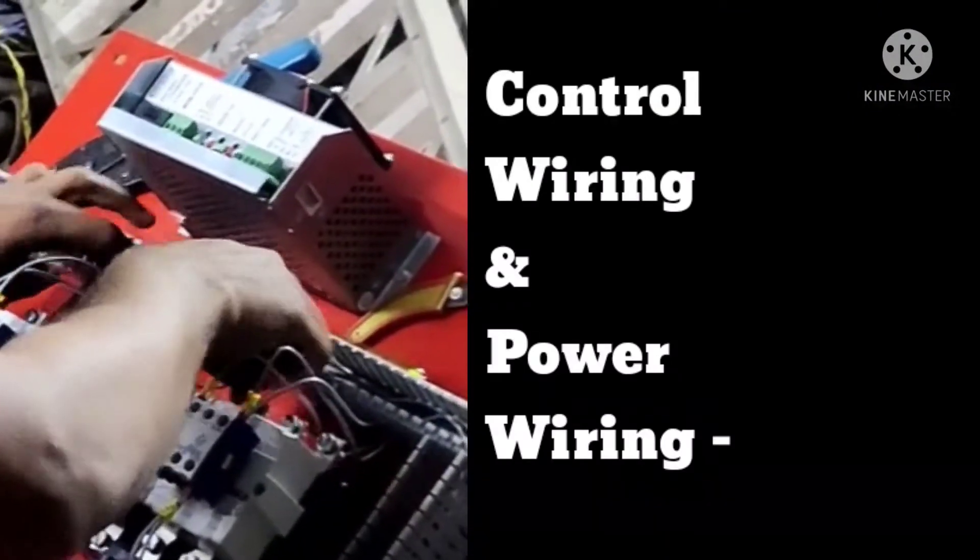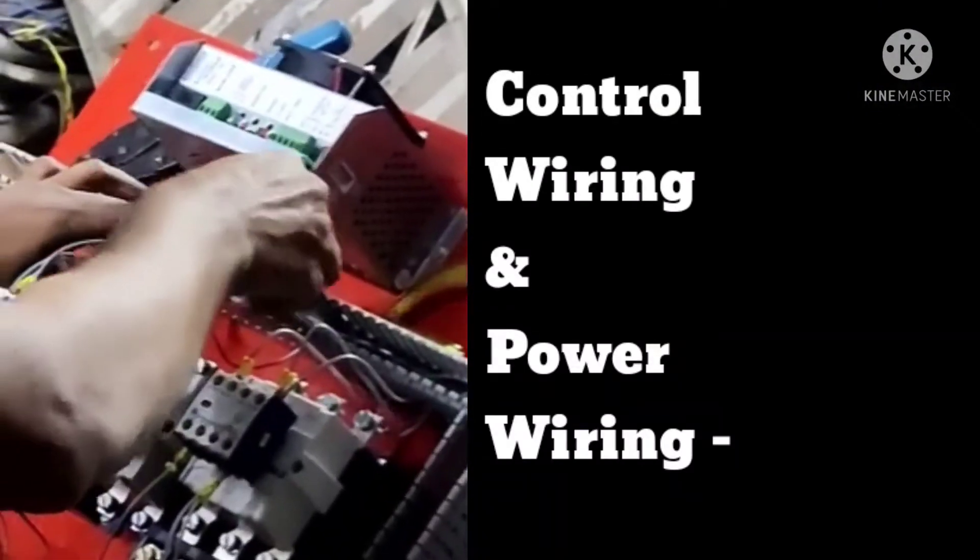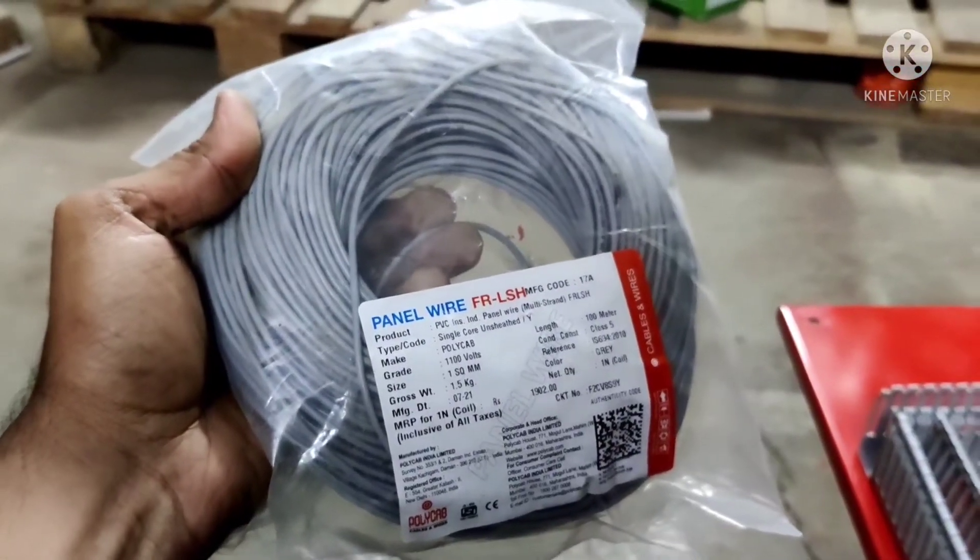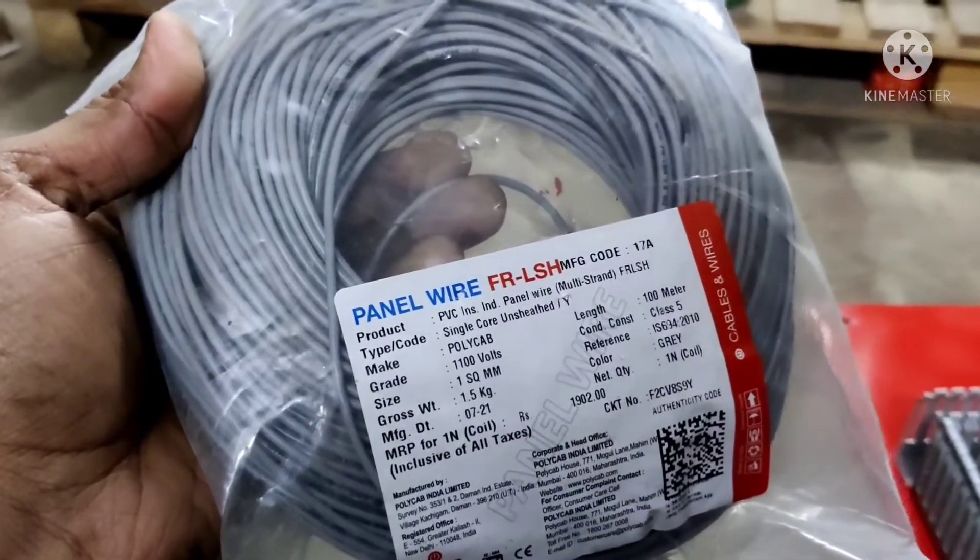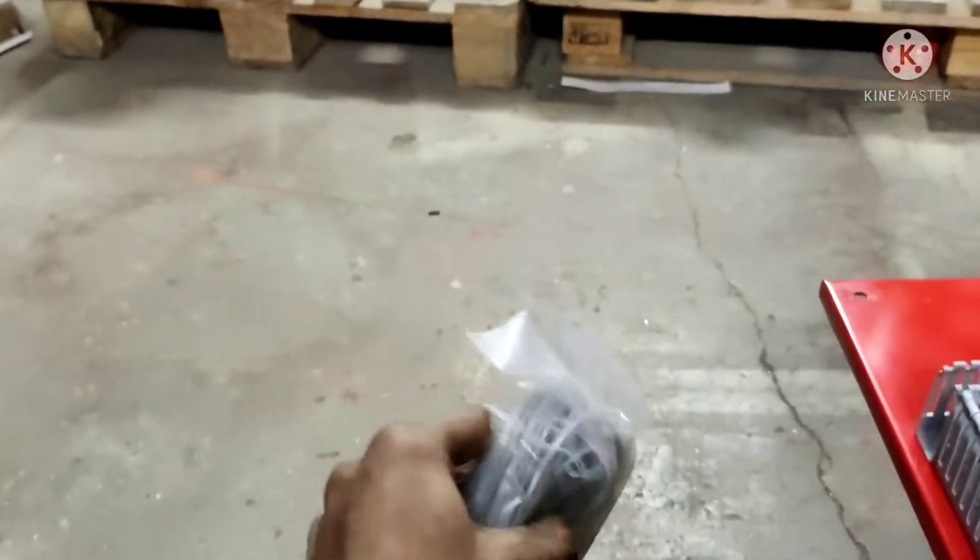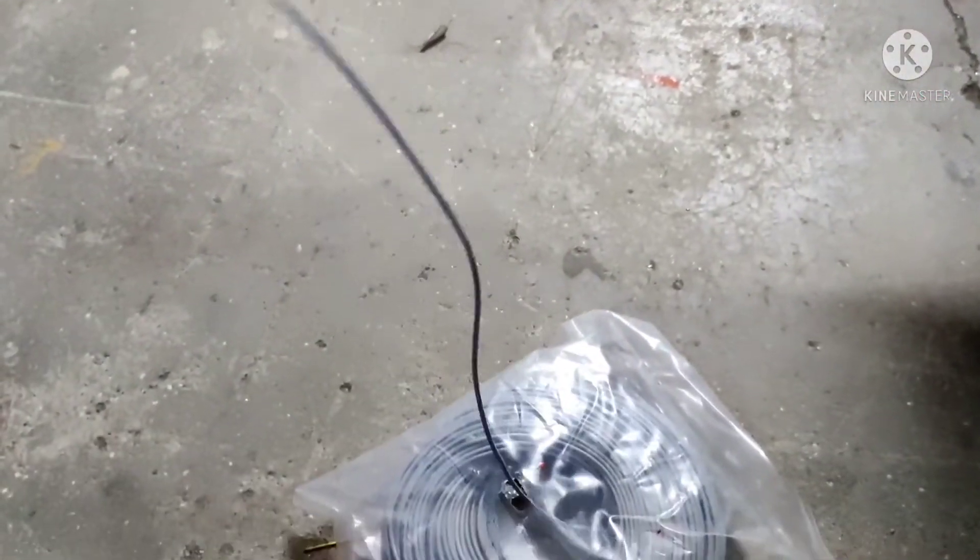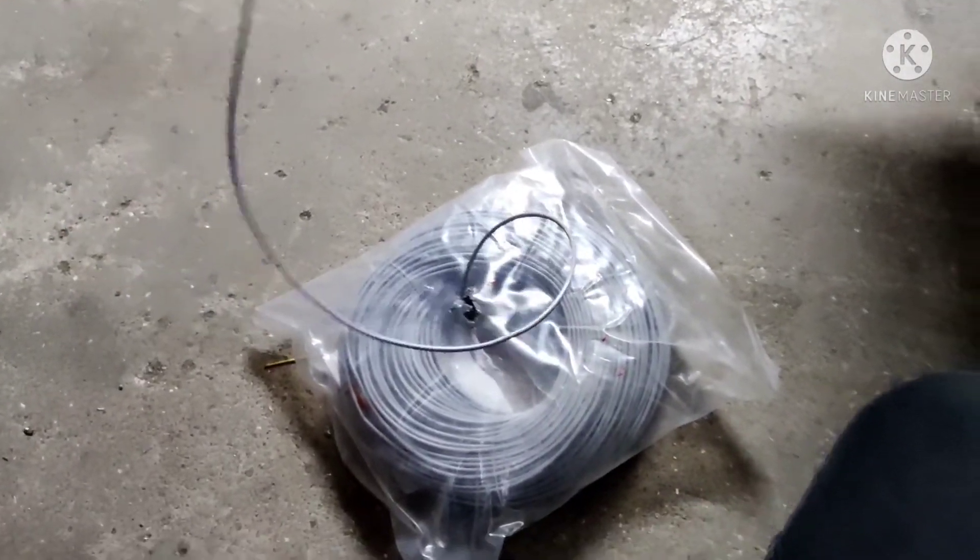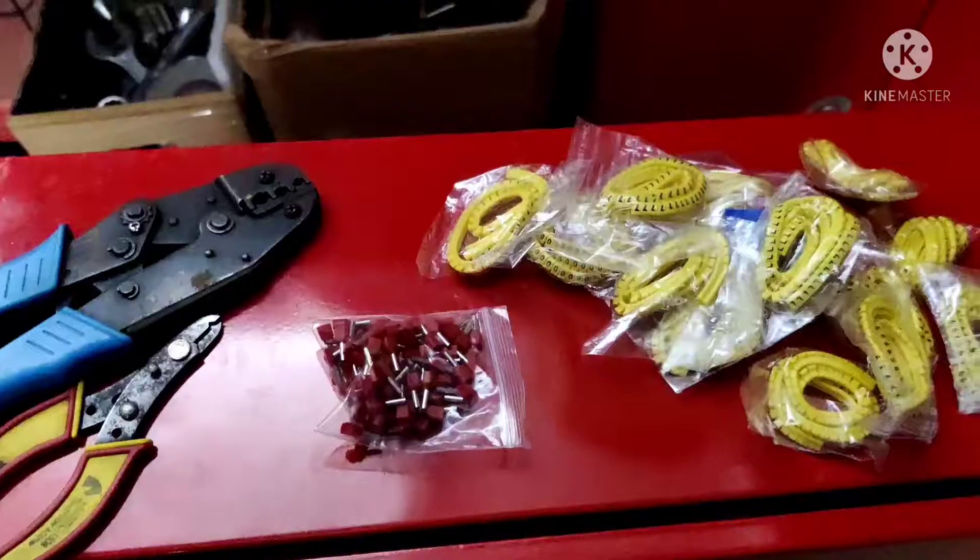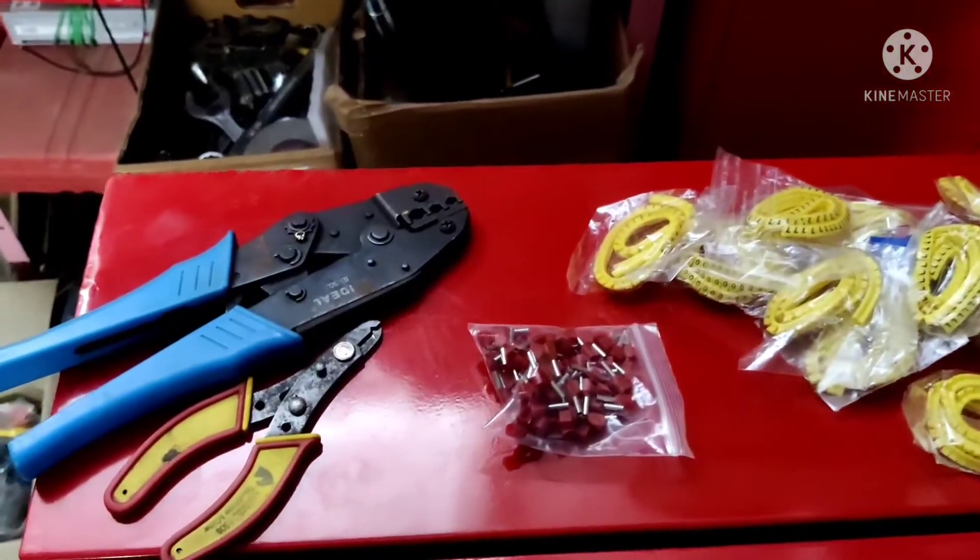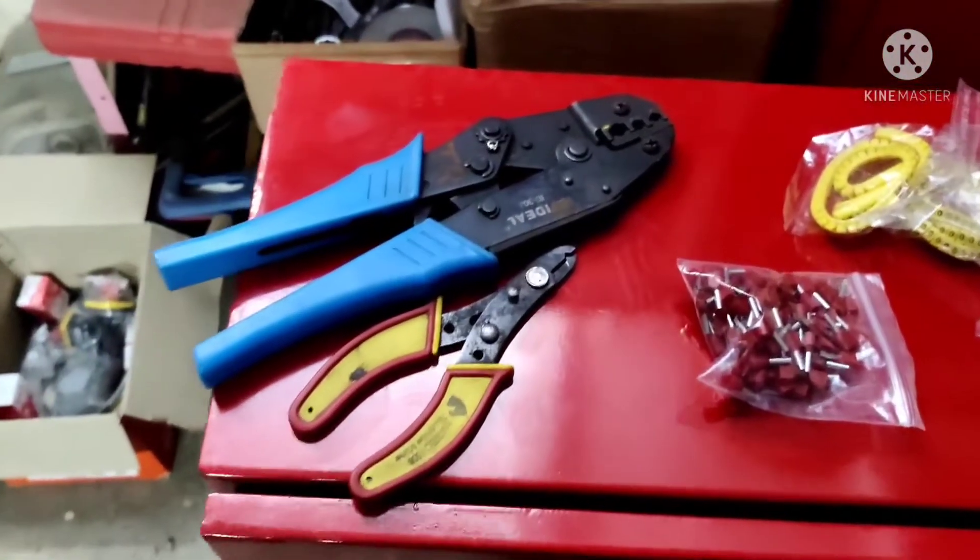The next step is to do control wiring and power wiring. Multi-strand single core one square mm copper cable is used for the control wiring purpose. Let's have a look at the material used for control wiring.